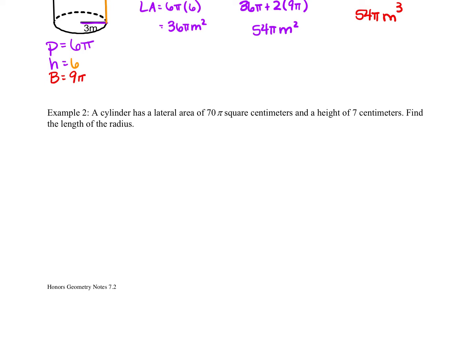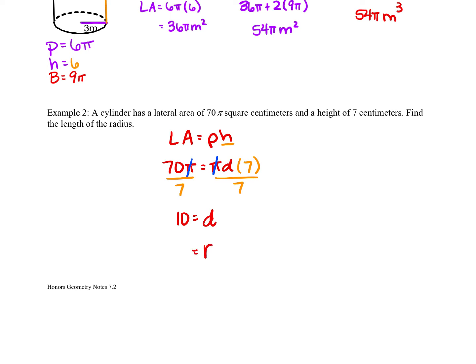The next problem says we have a cylinder with a lateral area of 70π square meters and a height of 7 centimeters — find the length of the radius. Our formula for lateral area is perimeter of the base times the height, so 70π equals pi times diameter times 7. Since we have pi on both sides we cancel them, then divide both sides by 7. We get that 10 equals the diameter, which makes our radius equal to 5 centimeters.